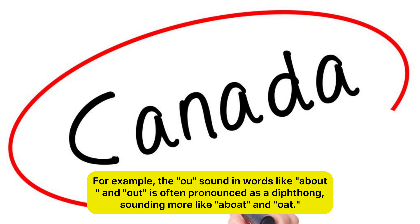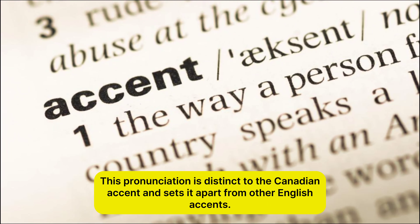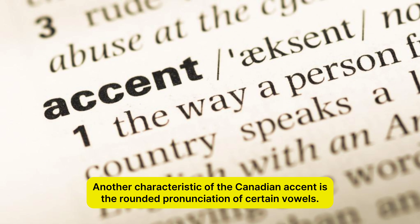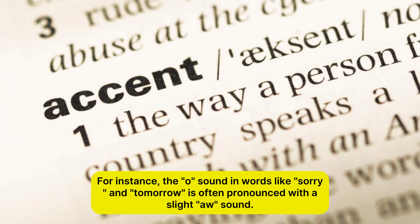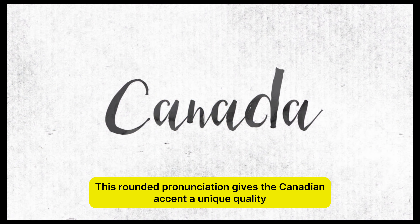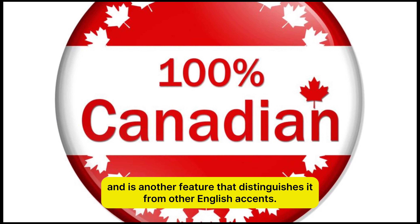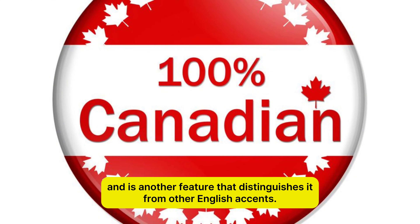For example, the O sound in words like 'about' and 'out' is often pronounced as a diphthong, sounding more like 'aboat' and 'out'. This pronunciation is distinct to the Canadian accent and sets it apart from other English accents. Another characteristic of the Canadian accent is the rounded pronunciation of certain vowels. For instance, the O sound in words like 'sorry' and 'tomorrow' is often pronounced with a slight A sound. This rounded pronunciation gives the Canadian accent a unique quality and is another feature that distinguishes it from other English accents.